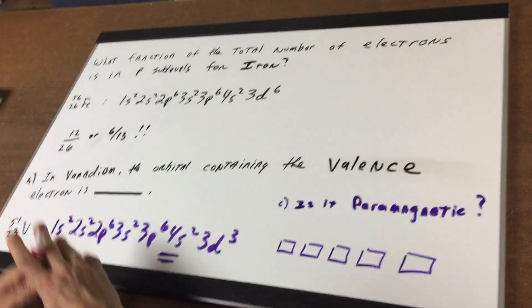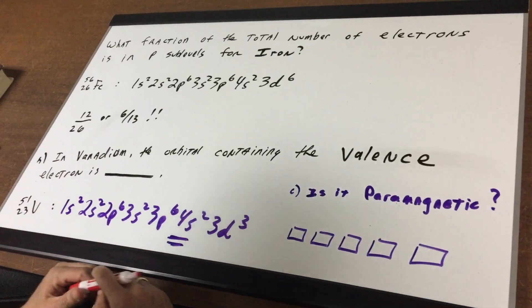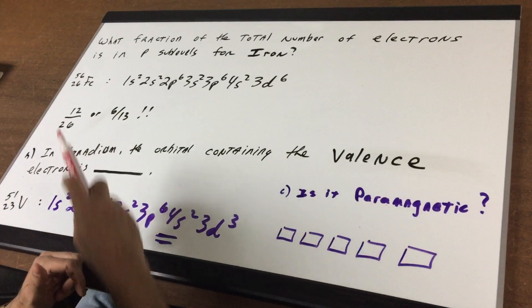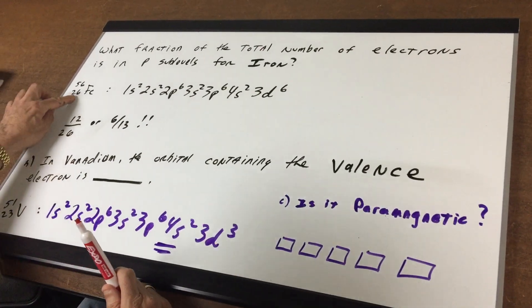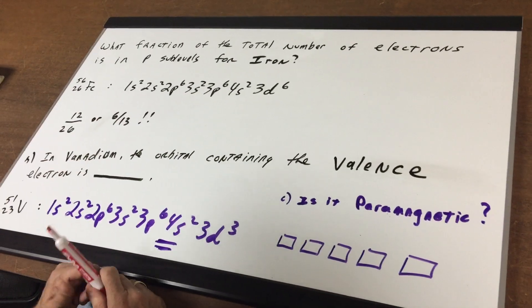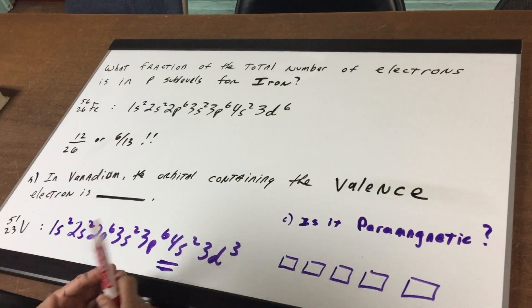I say to you, what fraction of the total number of electrons is in P sublevels for iron? Well we look up iron is 56 26 Fe. There are 26 protons here. If the element is neutral the number of protons equals the number of electrons.